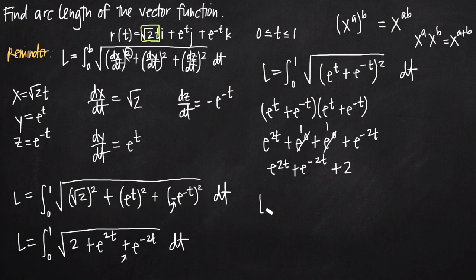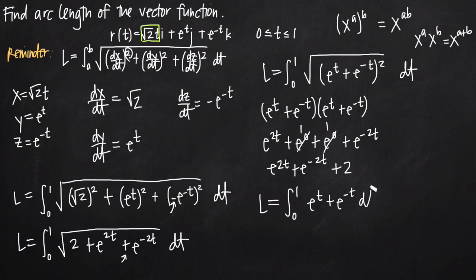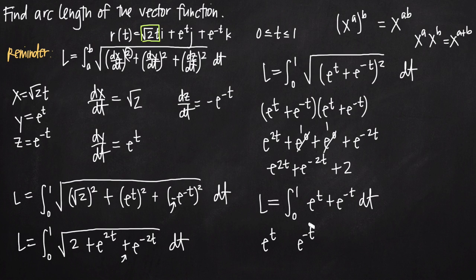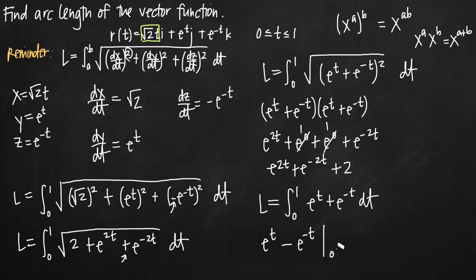Taking the square root of this perfect square, those cancel, leaving L equal to the integral from 0 to 1 of e to the t plus e to the negative t, dt. Both terms are easy to integrate. The integral of e to the t is e to the t. For e to the negative t, by the chain rule we keep it the same but divide by the derivative of the inside, negative 1, giving minus e to the negative t. We evaluate e to the t minus e to the negative t on the interval 0 to 1.